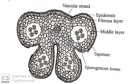Epidermis is the outermost layer of the anther. It consists of a single layer of compactly arranged cells. It exists from the very early stage and is not derived from the primary parietal cell. The cells of the epidermis undergo anticlinal division, which increases the surface area.